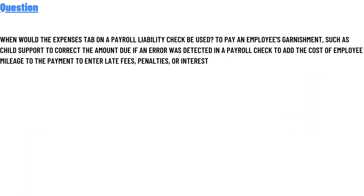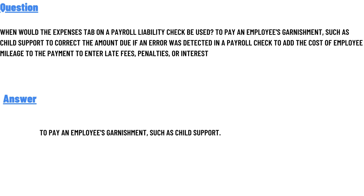Our question today is: when would the expenses tab on payroll liability checks be used? To pay and apply garnishments such as child support; to correct the amounts due if an error was detected in a payroll check; to add the cost of employee meals to the payments; or to enter late fees, penalties, or interest.